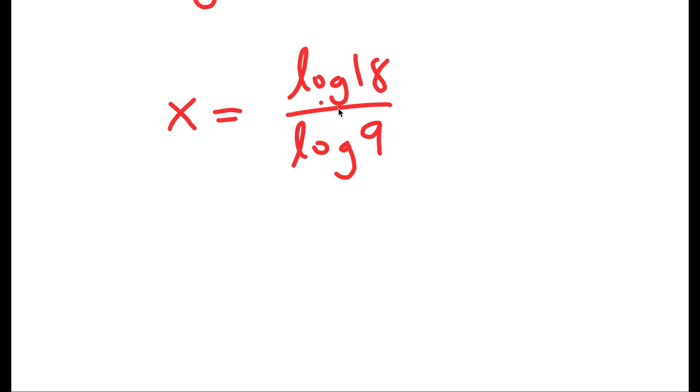Now although this is the value of x, I'm going to simplify it and get it to a decimal. So to do that, I'm going to first start by rewriting log 18 as log of 9 times 2.